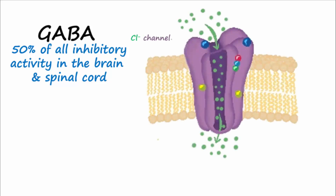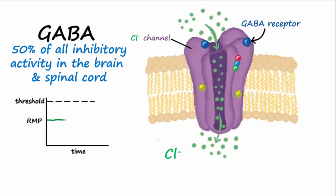The neurotransmitter GABA accounts for 50% of all inhibitory activity in the brain and spinal cord. GABA receptors are found on chloride channels on neurons, and when GABA binds to its receptor, chloride is allowed to flood into the cell, causing the resting membrane potential to become more negative and hyperpolarize, making an action potential less likely.